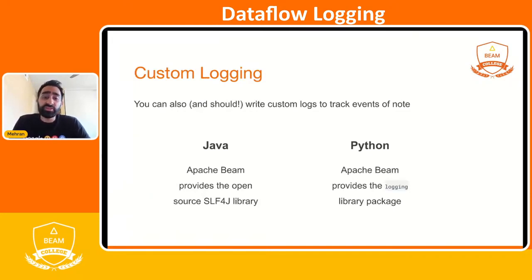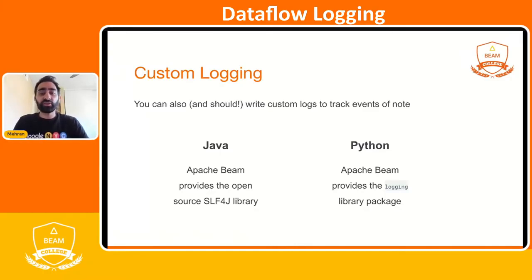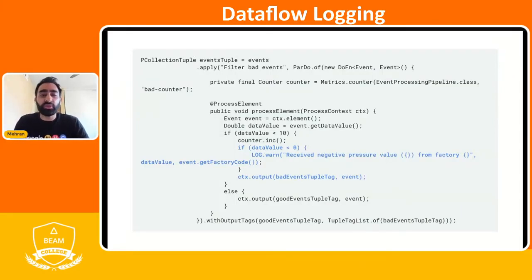You also have the ability to write your own custom logs for specific events that are interesting to you. In Java, we provide the SLF4J simple logging facade library, which is provided out of the box for Beam. We also contain support for a few other libraries — refer to the documentation for those. Python also includes the logging library package; all you need is an import statement to enable that.